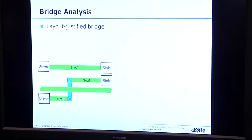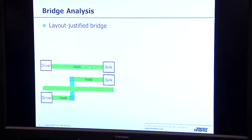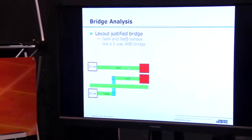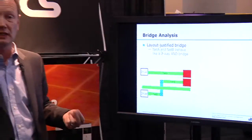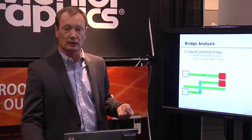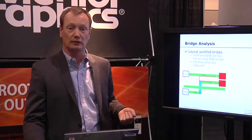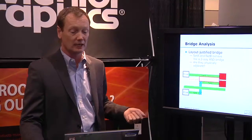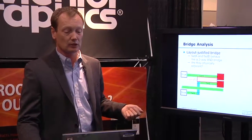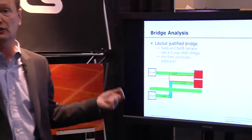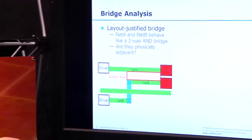Part of layout-aware diagnosis is that we use layout data to provide a more accurate result. As an example, in the case of a suspected bridge, we look at the failing nets and their layout to make sure they are actually physically adjacent. Then we call out the actual physical location in the design where these two nets are adjacent.